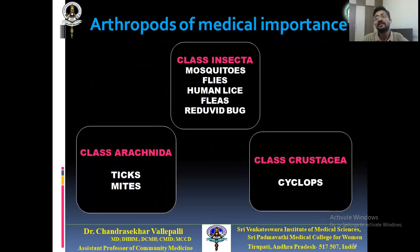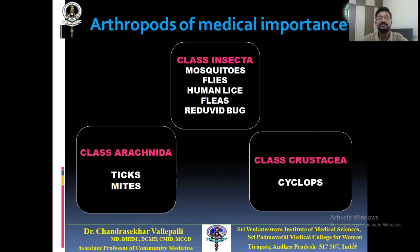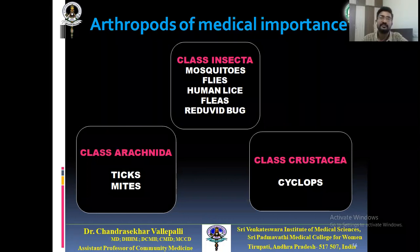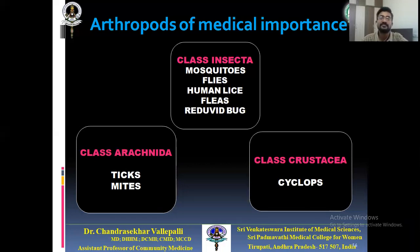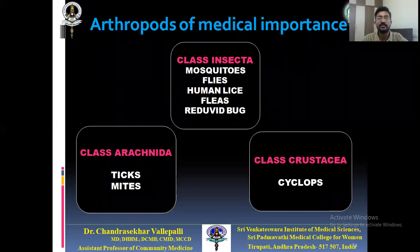Arthropods of medical importance are broadly classified into three classes: Class Insecta, Arachnida, and Crustacea. Class Insecta includes mosquitoes, flies, human lice, fleas, and reduviid bugs — these contain three pairs of legs, which is the characteristic feature. Class Arachnida includes ticks and mites. Crustacea includes Cyclops. These are the different arthropods of medical importance.